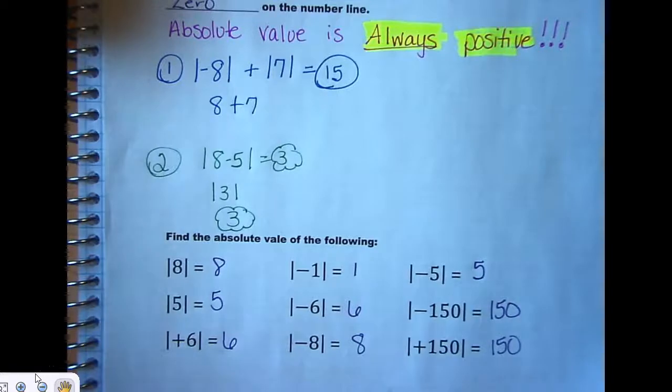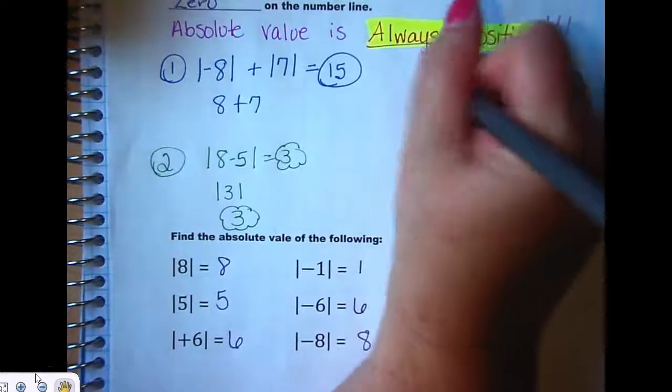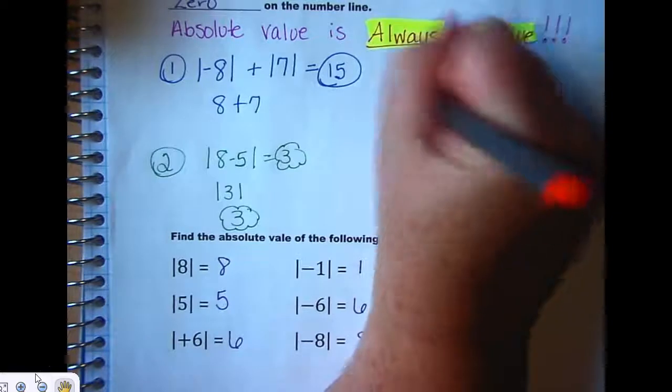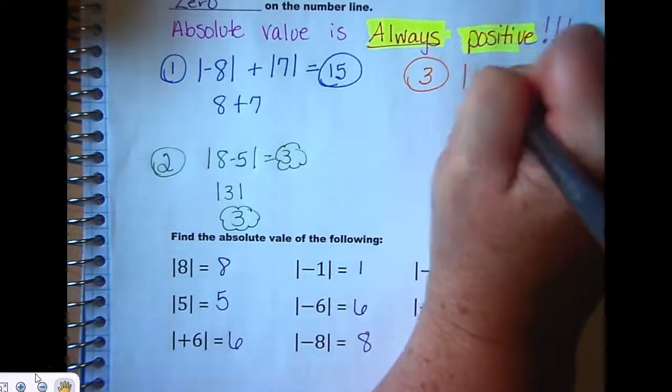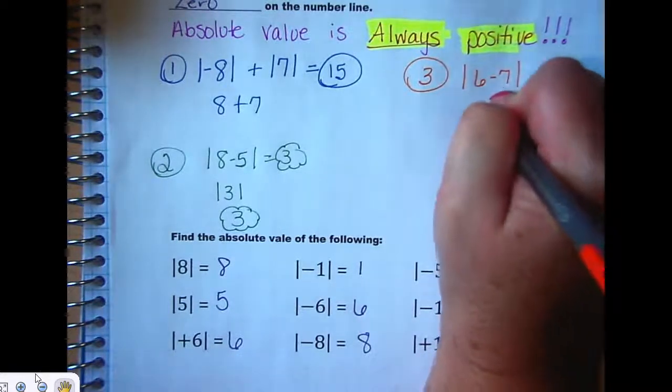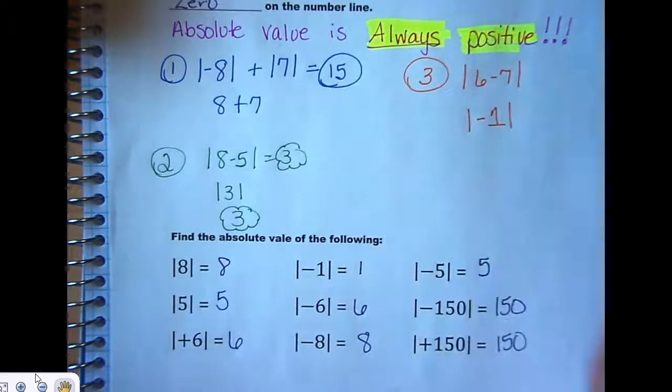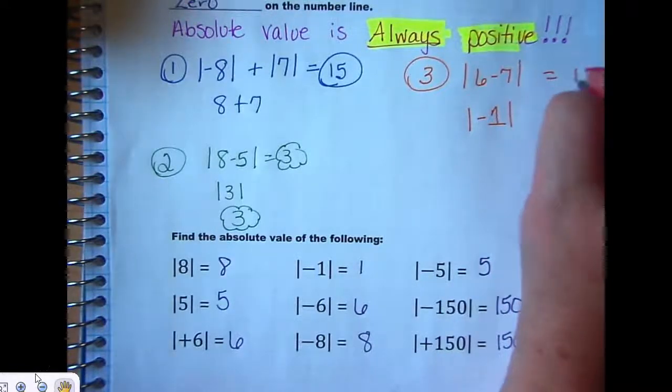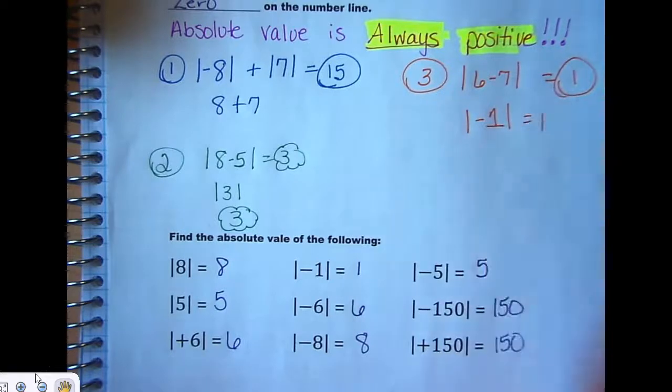Let's try another one. Absolute value of 6 minus 7. The first thing you have to do is the math inside the absolute value bars. What is 6 minus 7? Is it 1? It's negative 1, right? So, then you have to find the absolute value of negative 1. And what is the absolute value of negative 1? 1.